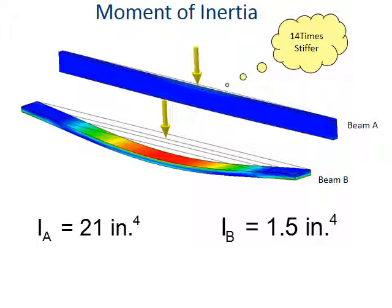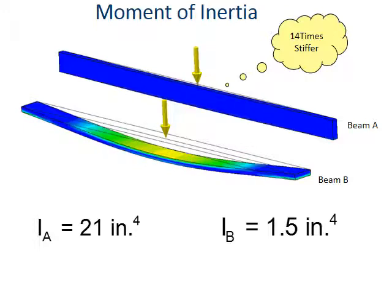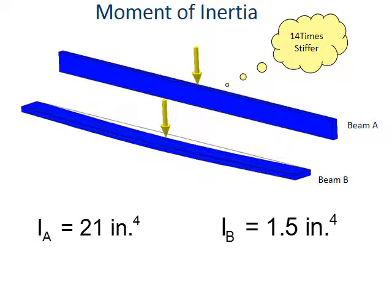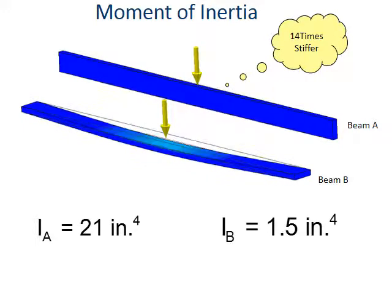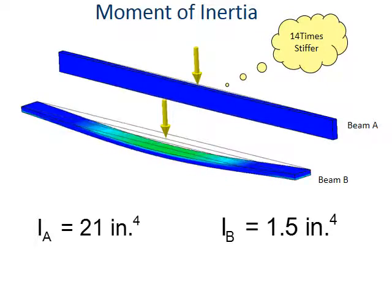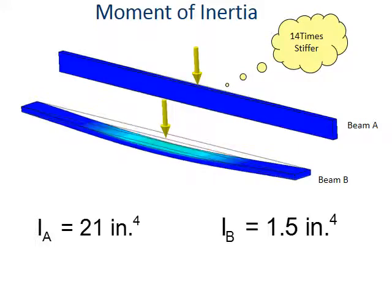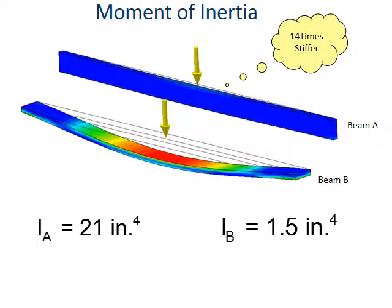If that deflection in beam B is caused by 100 pounds, I don't know that that's the case, but let's just assume so for the sake of discussion. So if that's 100 pounds, to get that same exact deflection, I would have to have 1,400 pounds on beam A to get the exact same deflection. That's the significance of I in the moment of inertia.